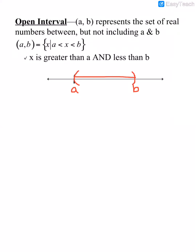Interval notation always uses either brackets or parentheses at the ends. If the numbers are not included, you're going to see parentheses. A is not included, so we use a parenthesis in front of A, and our interval goes to B. B is also not included, so we close it with a parenthesis.